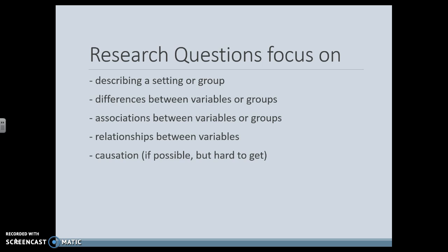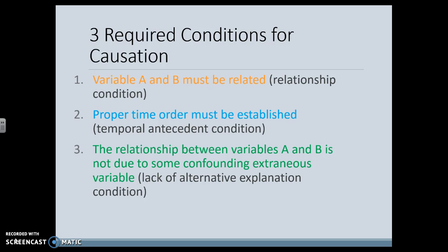Research questions for all of these are focused on describing a setting or a group quantitatively, looking at differences between variables or groups, looking at associations, looking at relationships between variables, and then causation as well — if you can get causation. In order to get causation, you have to show that variable A is related to variable B, and that A comes before B, and that the relationship between A and B is not affected by other variables interacting with that relationship.